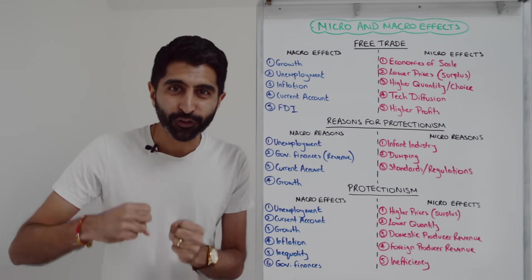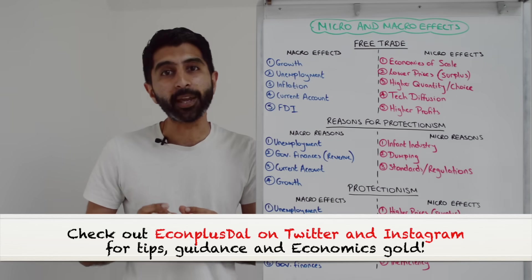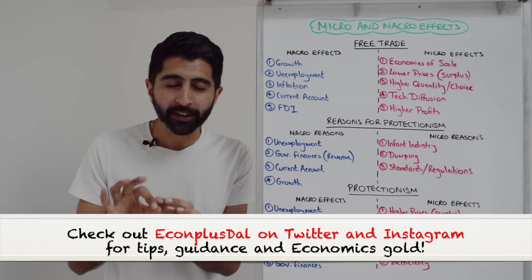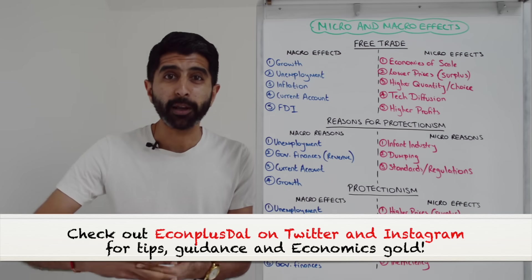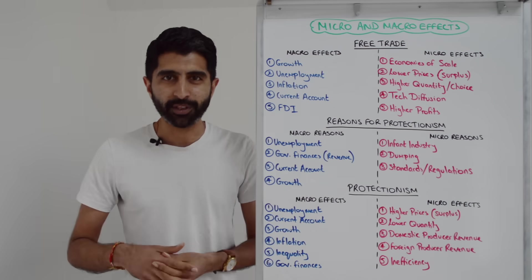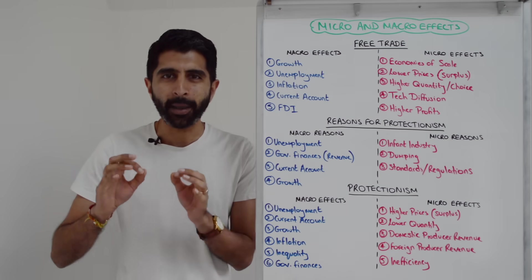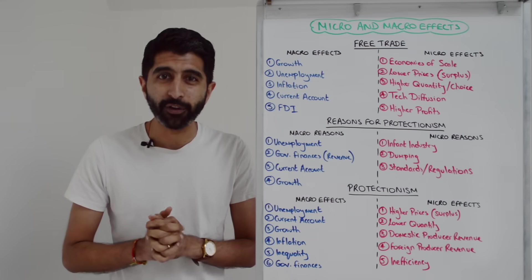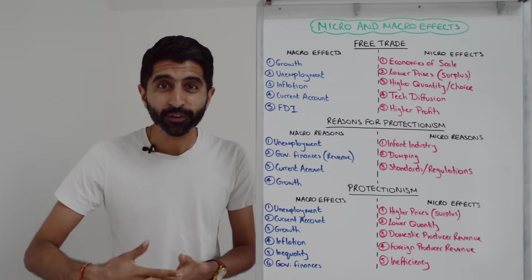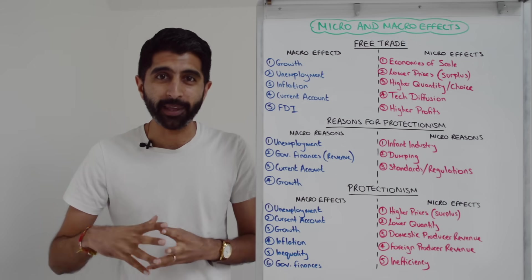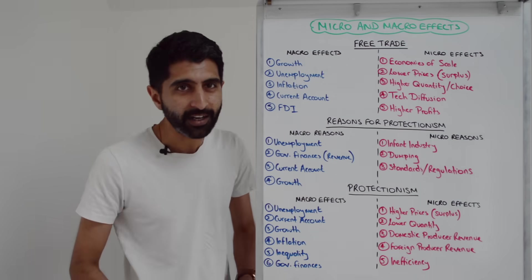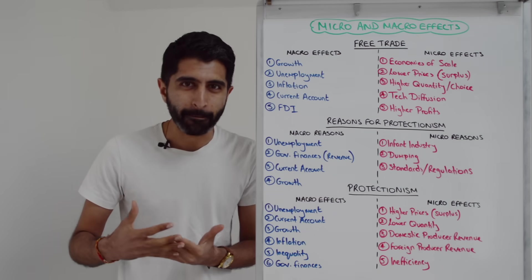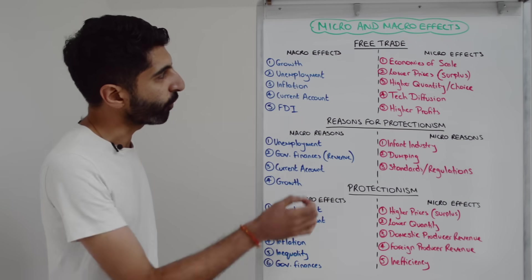Hi everybody. We know the topic area of trade and protectionism is a big one for Paper 3. So it's important that we're aware of the major micro effects, macro effects, but also the micro and macro reasons for protectionism. It's all coming your way in this video. Make sure that you've watched a variety of my other micro and macro effects videos on the channel already. Let's dive in, starting with the micro and macro effects of free trade. It makes sense to go to the macro effects first, seeing as that's where we learn it in the course.